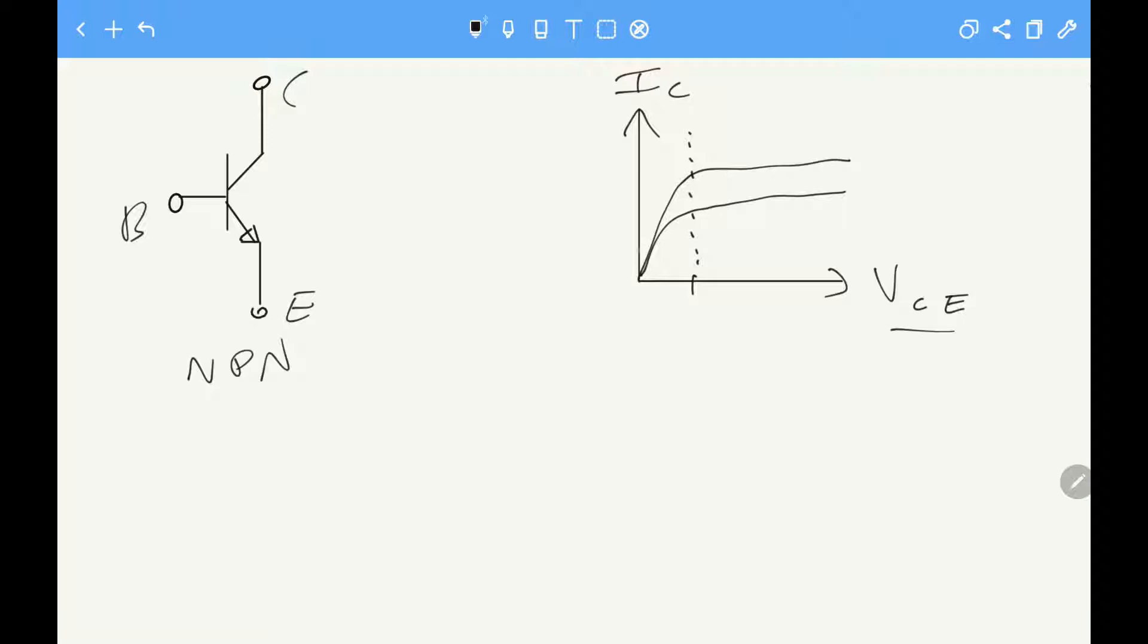So it rises up and then at a certain voltage it starts to flatten out, and which curve you have depends on the base current. And the question that I'll answer today is why do we want to bias our transistors in the saturation region and not somewhere here when we're working with digital electronics.